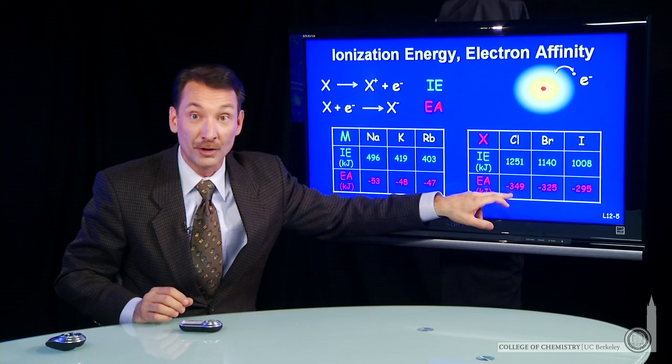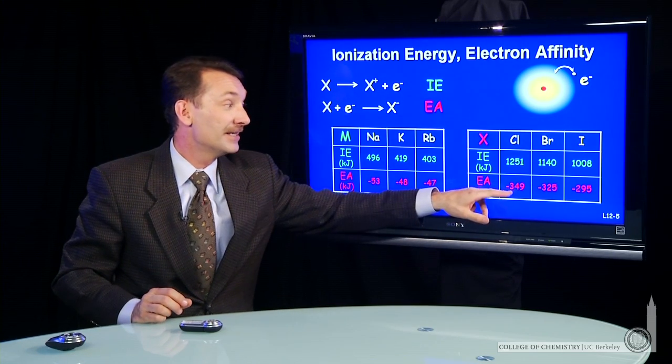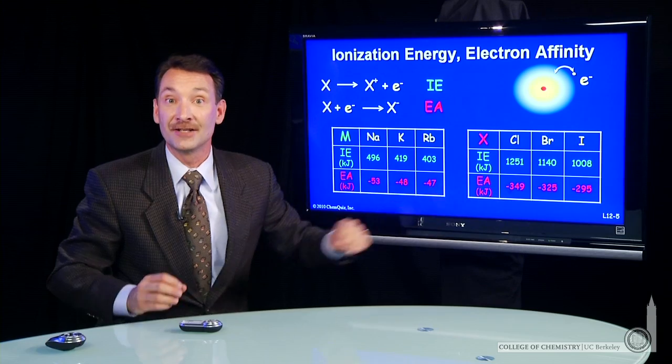When I add a mole of electrons to a mole of chlorine atoms, what I get is 349 kilojoules released.